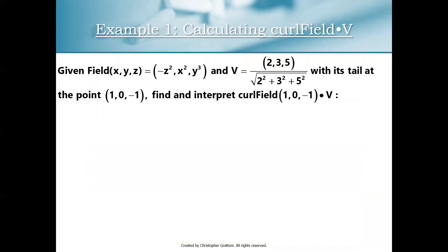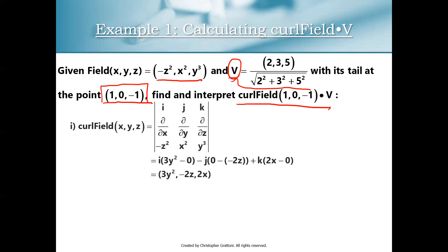Let's compute an example to make the material concrete. We have a vector field (−z², x², y³), a given unit vector — the normalized version of (2, 3, 5) — and a point in space (1, 0, −1). Our goal is to determine what kind of swirl the vector field delivers to V with its tail at (1, 0, −1). We compute curl F · V, evaluated at that point. To find the curl, I set up a 3×3 determinant with i, j, k across the top row, del (d/dx, d/dy, d/dz) across the middle row, and the vector field across the bottom row.